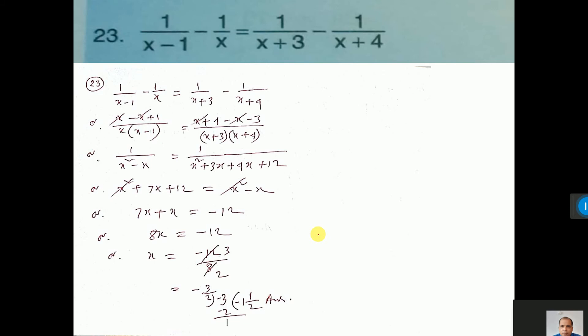Now this one. Do LCM. If you do LCM here, then see xx will cut. Here also xx cut. Now 1 by this is left. So you multiply this one here. So you multiply this one here. So here 4 minus 3 means 1 left. 1 by.